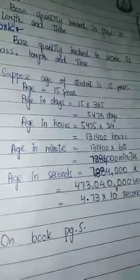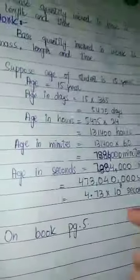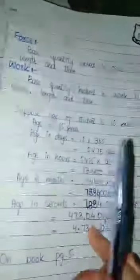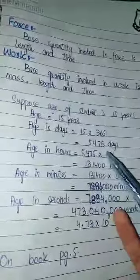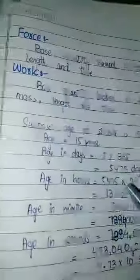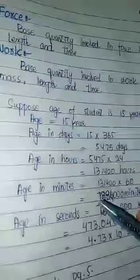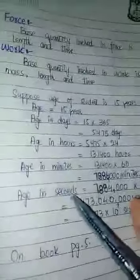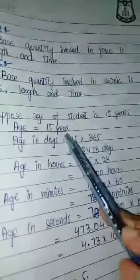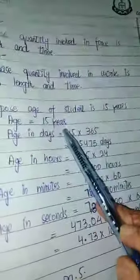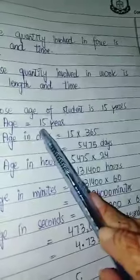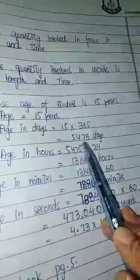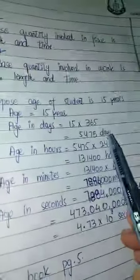So what do we do? First we have to convert the years to days. We know one year is how many days? 365. So our age was 15 years, you have to multiply by 365, so you calculate this. That gives us the age in days.